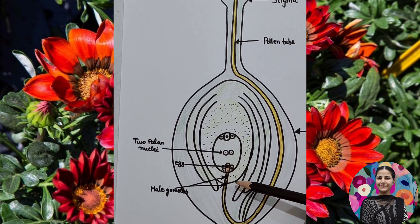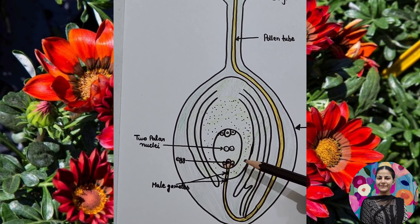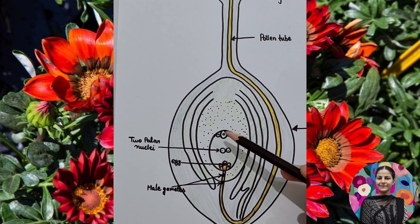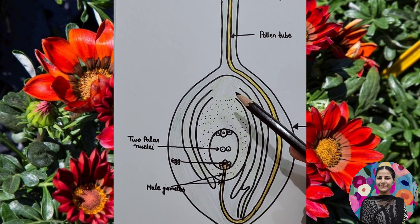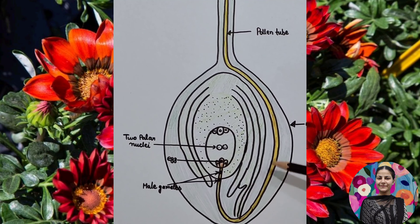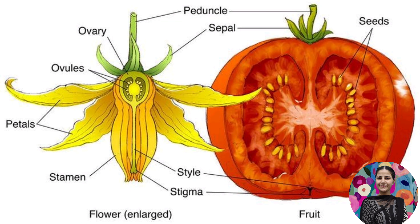This process is called double fertilization. As a result, the embryo forms, the endosperm forms, the ovary ripens into fruit, and the ovules become seeds. The seeds disperse and grow into new plants, completing the life cycle.